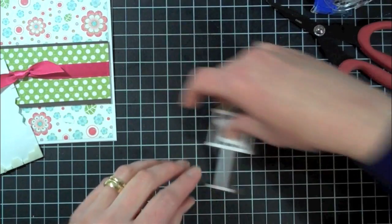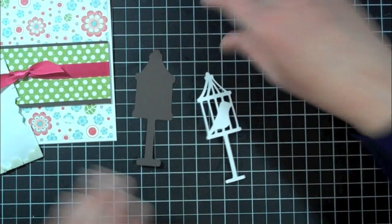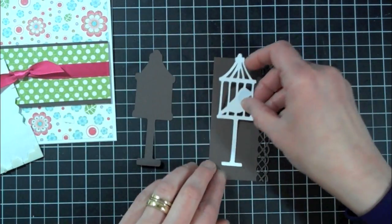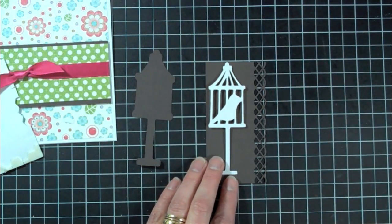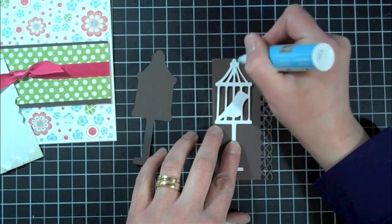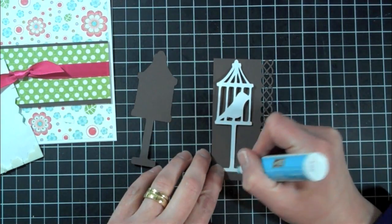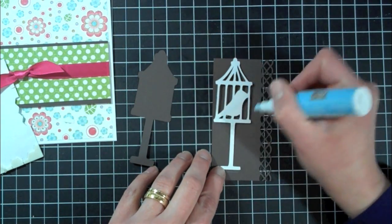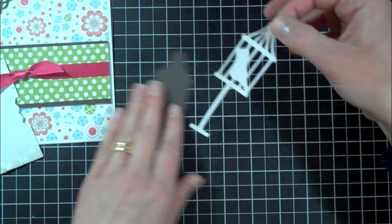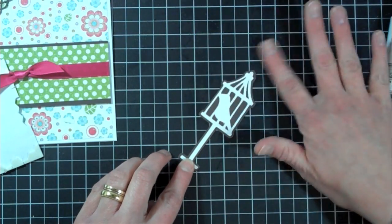And now I'm going to go ahead and put together my bird cage here. Let me grab a piece of scrap paper. This is just a piece of scrap paper I was going to use, but then changed my mind. And this is just a two-way glue. Now I don't normally add sentiments to my cards because I like to wait until it's time to give it to somebody and then I can add whatever sentiment I want for the occasion. So we'll just add that right onto there.